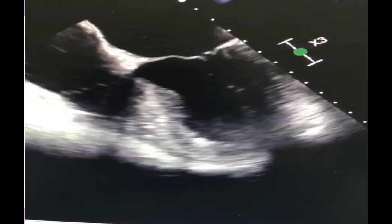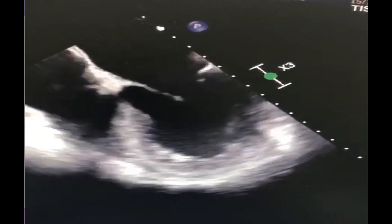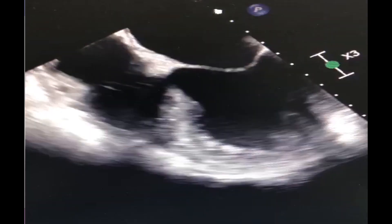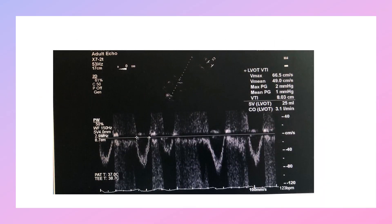This view also shows severely impaired LV contractility. The measurement of LVOT VTI is 8.3 cm and cardiac output is approximately 3.1 litres per minute, which is decreased — confirming the indication for ECMO support.